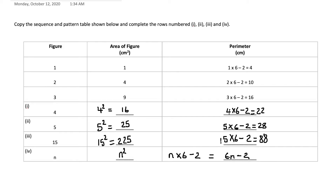So for any term where we want to find the perimeter, we substitute into this rule. For example, if we have figure 10, we substitute n = 10: 10 times 6 minus 2 gives us 58. This is the rule of the sequence — n squared is the rule for the area column, and 6n minus 2 is the rule for the perimeter column.